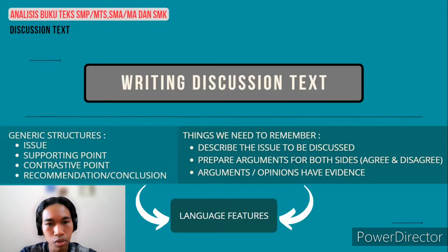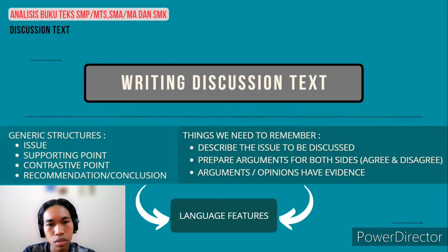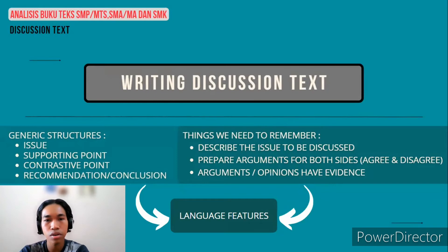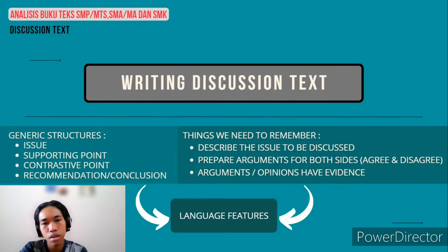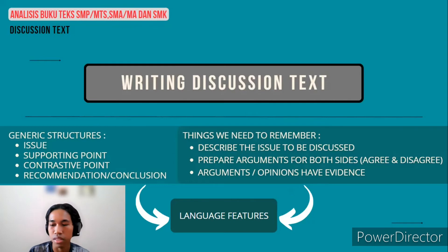I'm going to tell you about language features in writing discussion text. There are several language features: introducing a category or general participant, using relating verbs, using thinking verbs, using modalities, using adverbials of manner, using conjunctions or transitions, and using simple present tense.